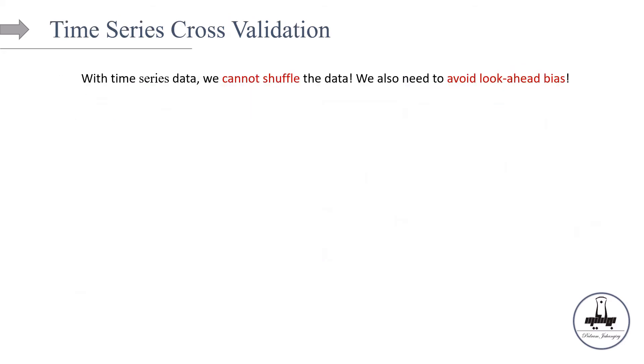Just to summarize: remember, cross-validation is always applied to the train set. It's used for validating the model — basically tuning the hyperparameters, making sure that the model is not overfitting, and also to get an estimate of the model's performance in the test set. In K-fold cross-validation, we implicitly assume that the observations in those K-folds are independent from each other.